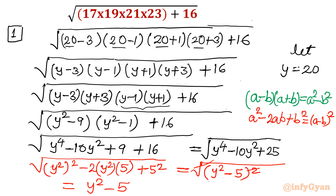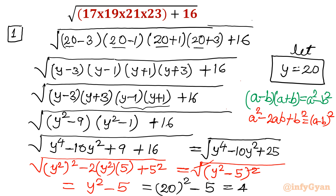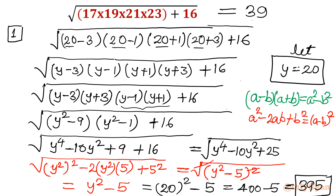The square root and square cancel, leaving y squared minus 5. Now let's substitute back the value of y. Since y equals 20, y squared equals 400. So the answer is 400 minus 5 equals 395. This is the first approach.